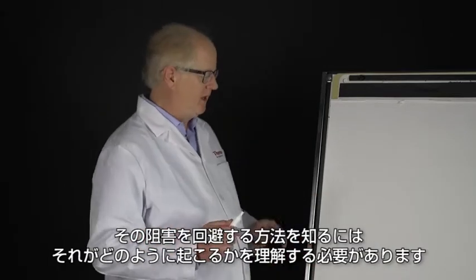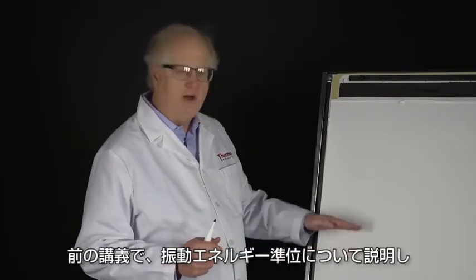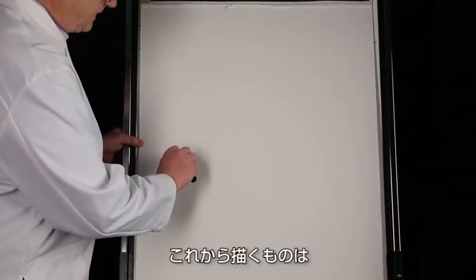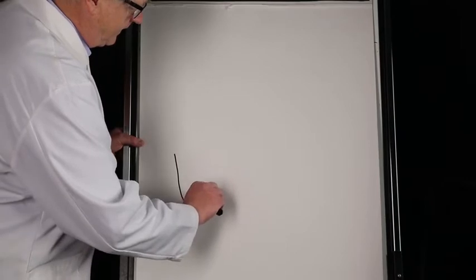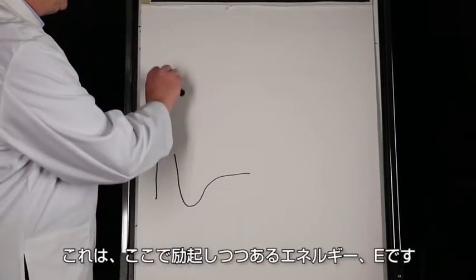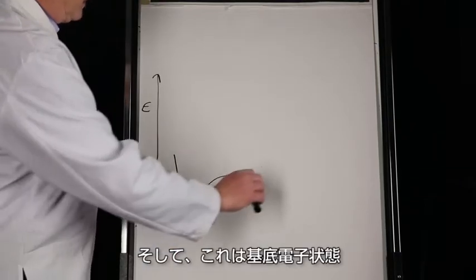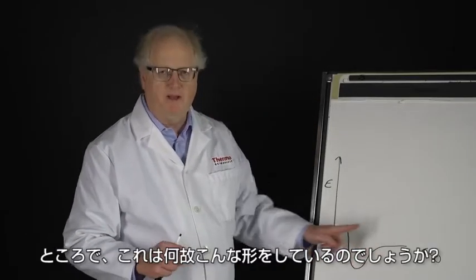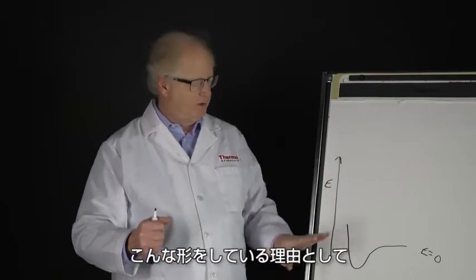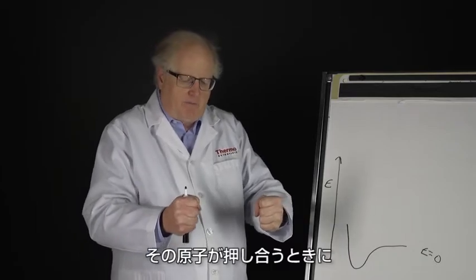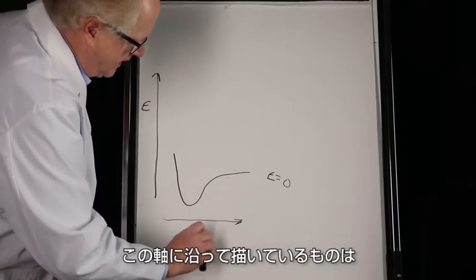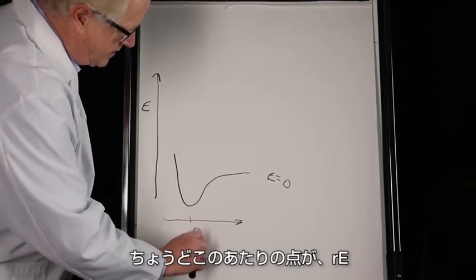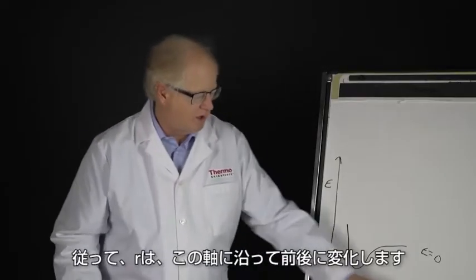The way you get around it has to do with understanding how it happens. Earlier I pointed out the vibrational energy levels. Now we're going to look at something a bit more complicated — energy going up on the y-axis (E), and this is going to be the ground electronic state of the molecule. It's shaped like this because as a diatomic molecule changes, what's plotted along the x-axis is r, the bond distance.